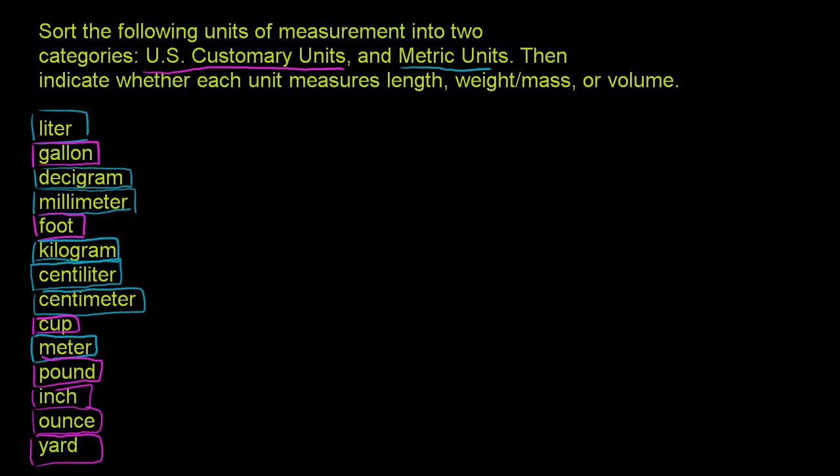Now, the next thing we need to figure out is whether something is a measure of length, weight/mass—and they're not exactly the same thing. Mass is how much of a substance you have. Weight is the force with which gravity is pulling on that mass. And it could change depending on what planet you're on. But on Earth, they tend to be used interchangeably. So we'll use it roughly interchangeably here.